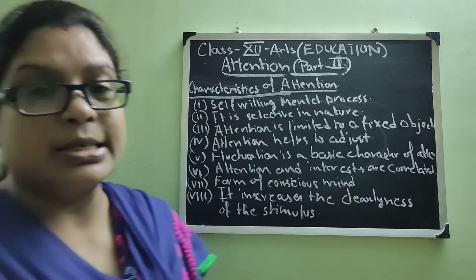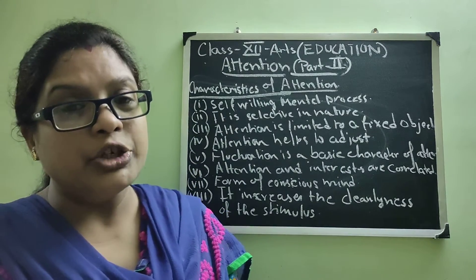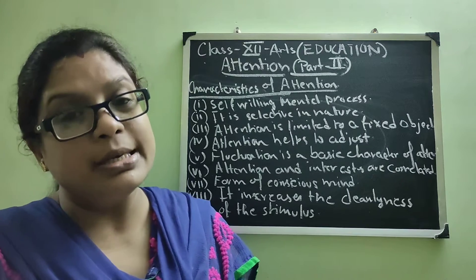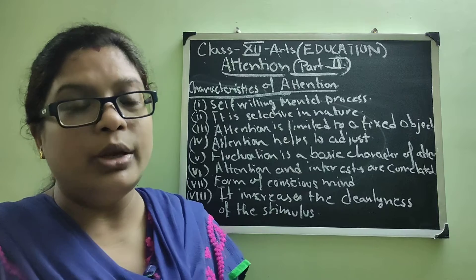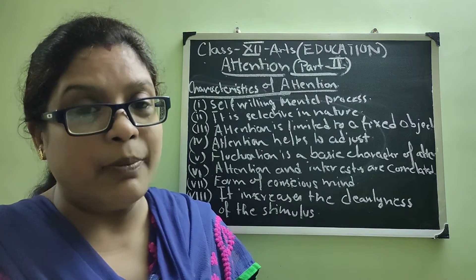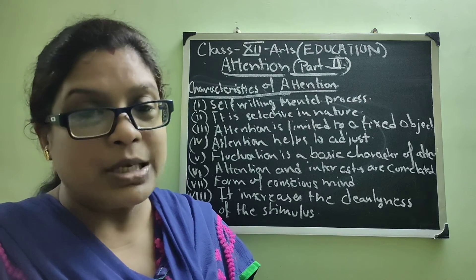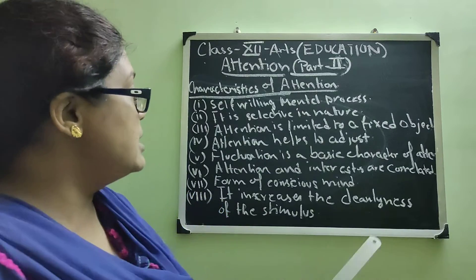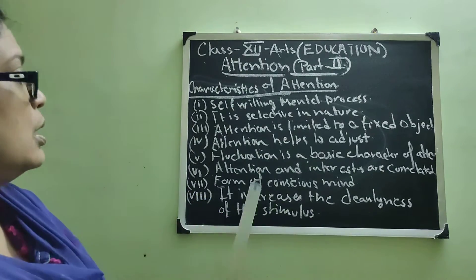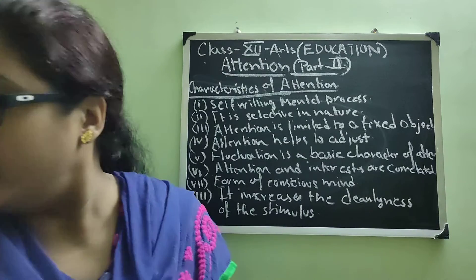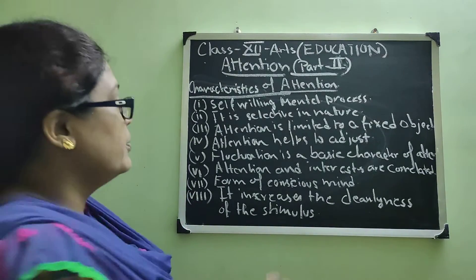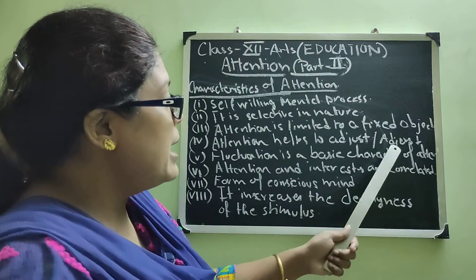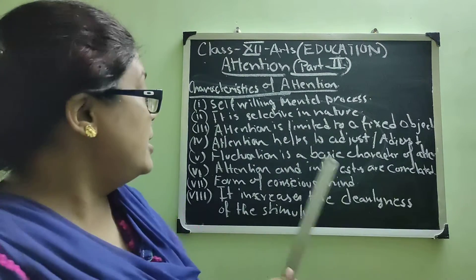Next point: attention helps to adjust. When you are paying attention, you are avoiding all the stimuli of your environment, avoiding all disturbances — closing your door, closing your window, sitting in a comfortable place where you can study without disturbance. You are adjusting the place where you are sitting, making it according to your convenience. So attention helps in adjustment, and vice versa: when you adjust with the environment, it helps you to pay attention on a particular topic.